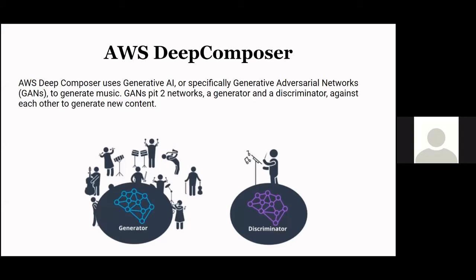AWS Deep Composer uses generative AI — specifically generative adversarial networks. There are two networks: a generator network and a discriminator network. This scenario can be compared to musicians playing a song with different instruments, while a conductor gives feedback, identifies mistakes, and improves the quality of the music.